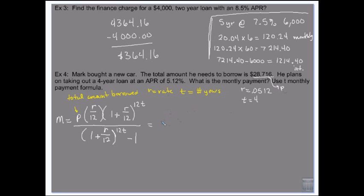So 28,716 times 0.0512 over 12, 1 plus 0.0512 over 12 raised to the power of 12 times 4, over 1 plus 0.0512 divided by 12 raised to the power of 12 times 4 minus 1.